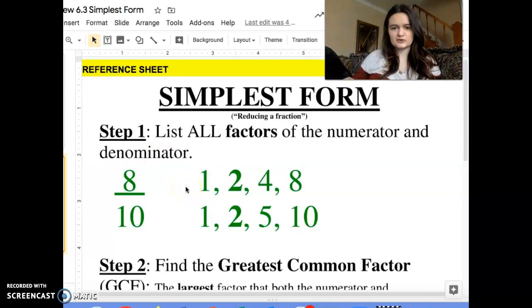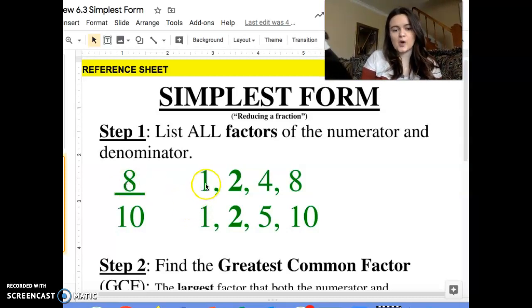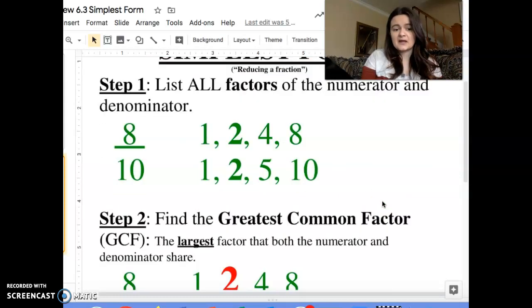Step one: you list all the factors of both the numerator and the denominator. So I have eight here. I need to list my factors for eight. I know one times eight and two times four gives me eight. Jump down to the denominator. I have one times ten and two times five. These are my factors for eight and ten.